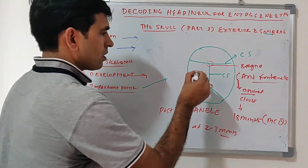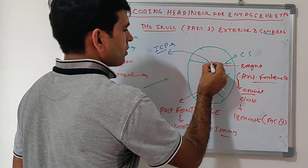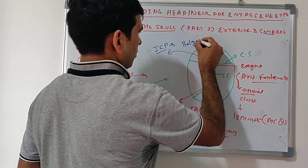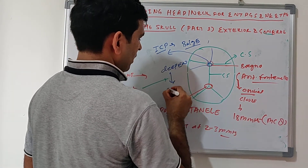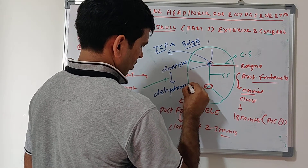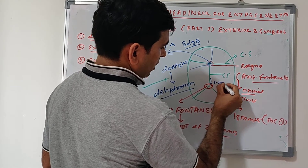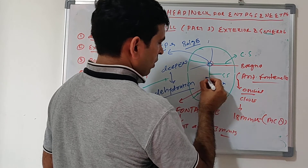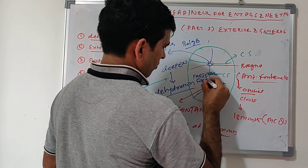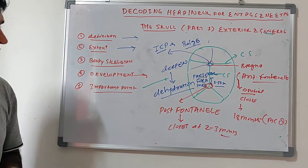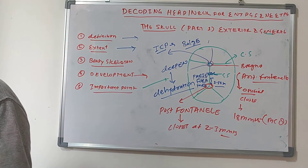Where the lambdoid and sagittal sutures meet, this is called the posterior fontanelle, which closes at 2 to 3 months. The significance: if intracranial pressure increases in neonates it will show as a bulge at the fontanelle. If it is depressed, it is a sign of dehydration. 3.5 centimetres above the posterior fontanelle are two parietal foramina.